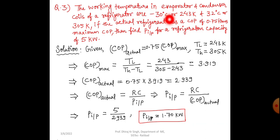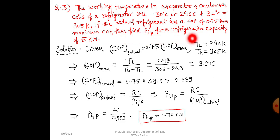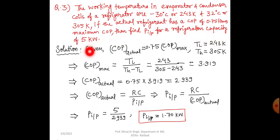Next question: the working temperatures in the evaporator and condenser coils of a refrigerator are minus 30 degrees Celsius (243 Kelvin) and 32 degrees Celsius (305 Kelvin). The actual refrigerant has a COP of 0.75 times the maximum COP. Find the power input for a refrigeration capacity of 5 kilowatt. Given: COP_actual = 0.75 × COP_maximum, T_L = 243 Kelvin, T_H = 305 Kelvin. Maximum COP is found using T_L / (T_H − T_L).